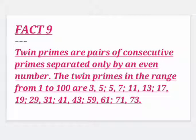Have you heard about twin primes? Twin primes are pairs of consecutive primes separated only by an even number. The twin primes in the range from 1 to 100 are 3, 5 which are separated by an even number 4; 5, 7 which is separated by an even number 6; and 11 and 13 which is again separated by an even number 12.